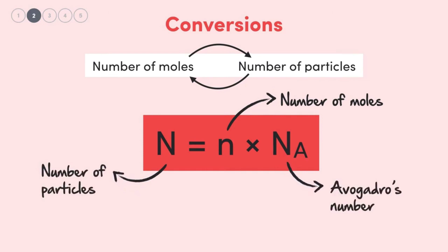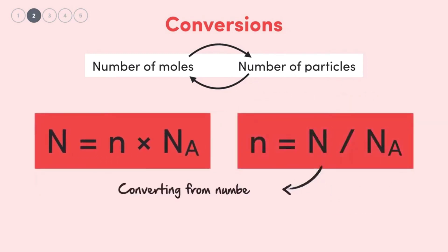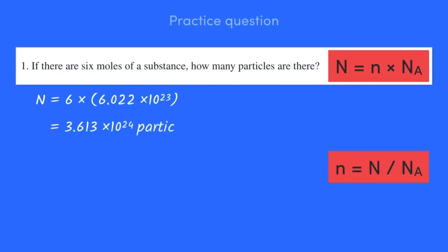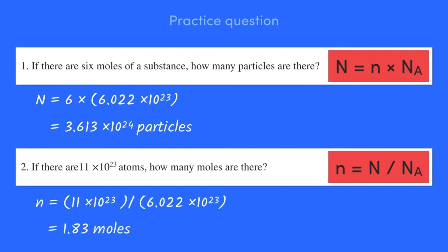You need to understand this concept well because it forms the foundation of everything. When one mole of a substance contains Avogadro's number, we can relate it as: number of particles = number of moles × Avogadro's number. So one mole of oxygen gives 1 × Avogadro's number particles; two moles gives 2 × Avogadro's number. Conversely, number of moles = number of particles ÷ Avogadro's number. For example, having a number of particles of 10²³ means dividing by Avogadro's number to get the moles.